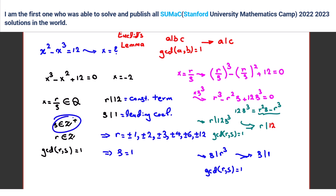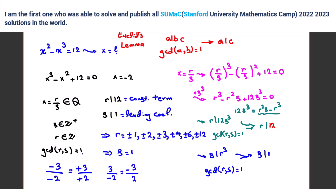Exactly — because we can always take s to be positive. If s were negative, for example -2 over -4 equals 4 over 2, and negative 3 over negative 2 can be written as positive 3 over positive 2. So if it's negative, we can move the negative to the numerator. We can always consider the denominator positive.